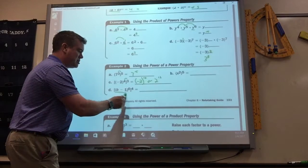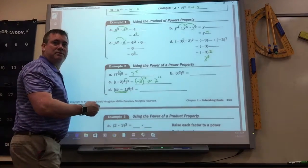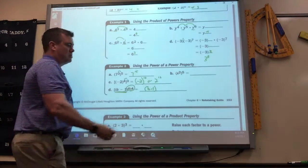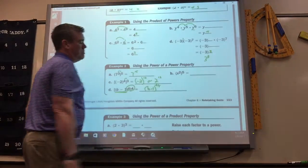This one, now, you notice this is in parentheses, the B minus 1. So you keep it in parentheses, and then you just multiply those two. So it's B minus 1 to the 24th.